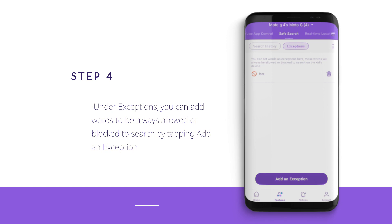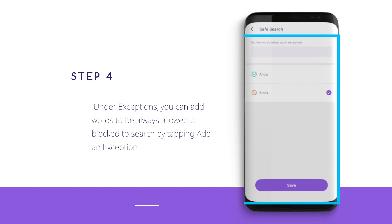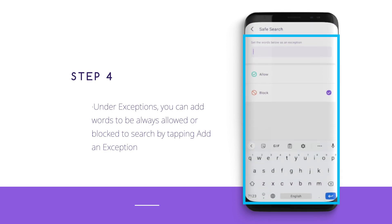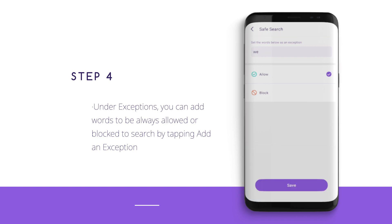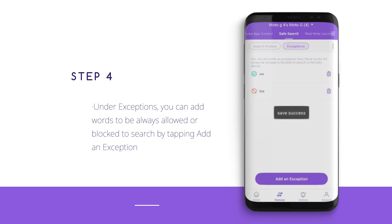Step 4: Under Exceptions, you can add words to be always allowed or blocked in search by tapping Add an exception. After you tap Add an exception, you can enter the word and choose whether to allow or block it.